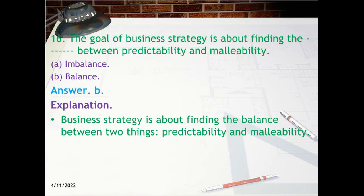Question 16: The goal of business strategy is about finding the ___ between predictability and malleability. A. Imbalance, B. Balance. Answer: B. Balance. Explanation: Business strategy is about finding the balance between two things — predictability and malleability.